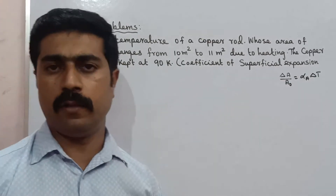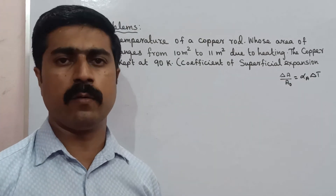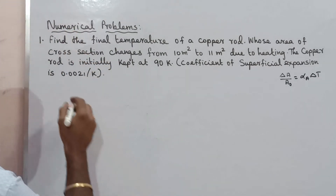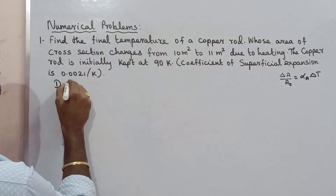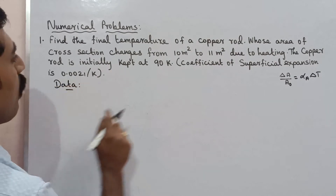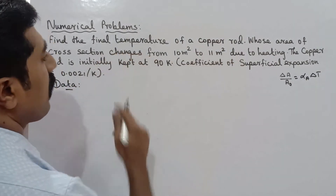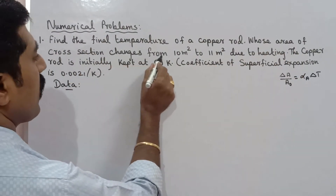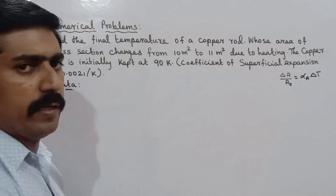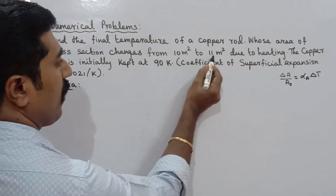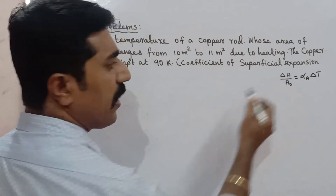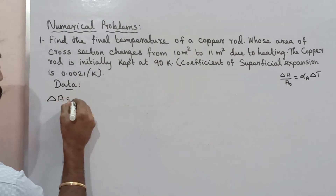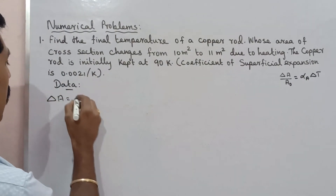So first, we can see the data which allows us to solve the problem. What is the final temperature? The area of cross-section changes from 10 m² to 11 m². This is the initial area and this is the final area. Delta-A is equal to the final area minus the initial area, that is Af minus A0.